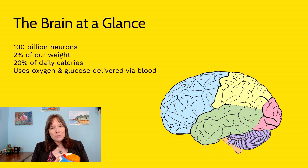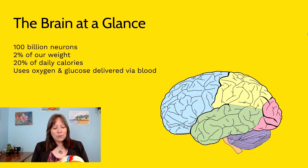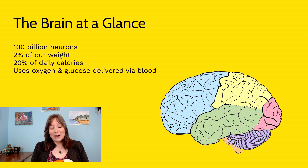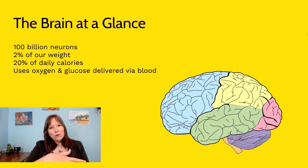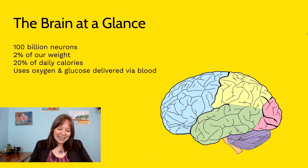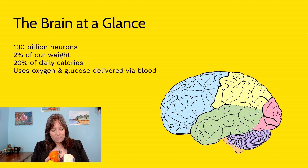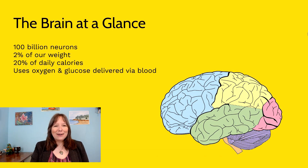We often talk about gray matter and white matter. The soma, or the bodies of the neurons, tend to look like gray matter, and the axons — because we're wrapping that myelin sheath — tend to look like white matter. So the outside of the brain is the gray matter, and a lot of the inside gooey bits will be the white matter.